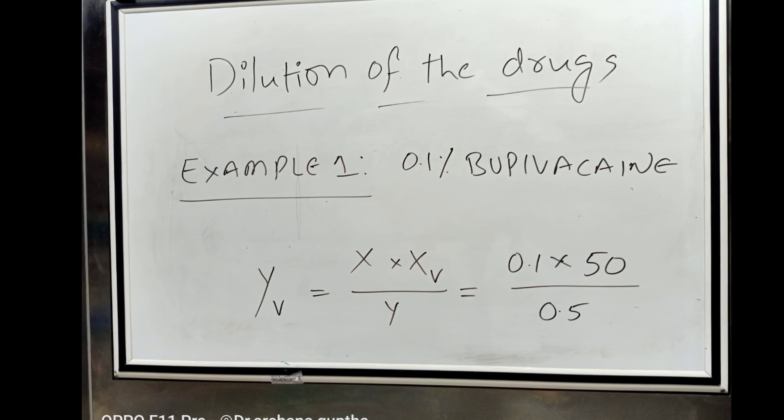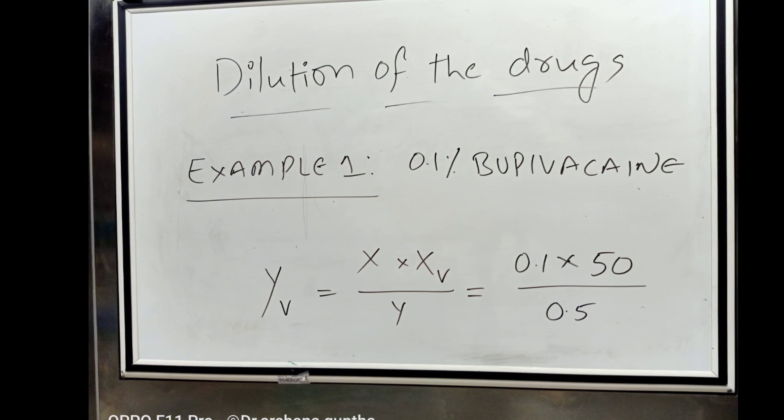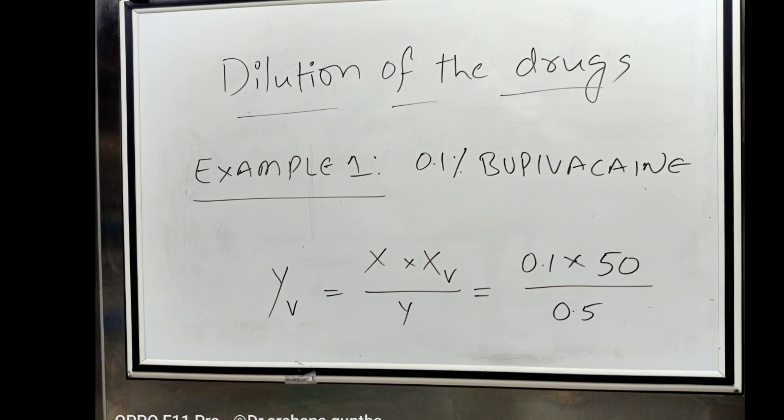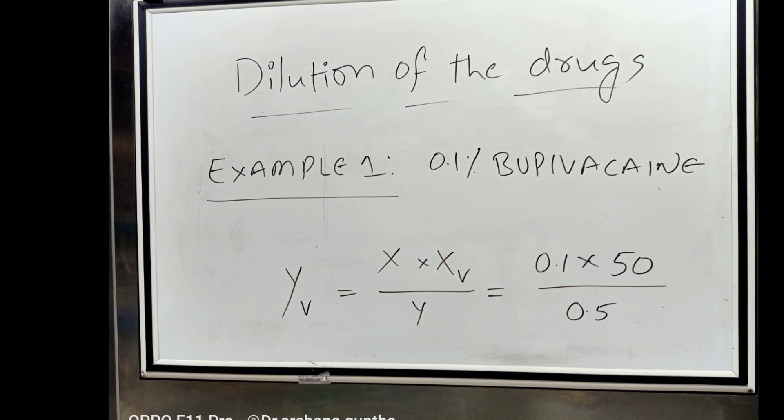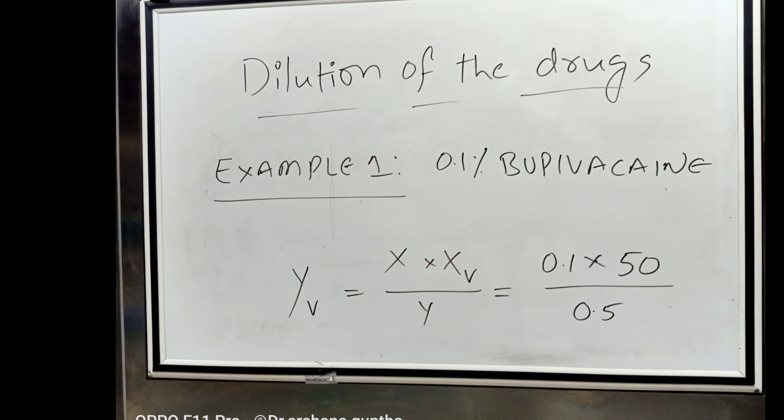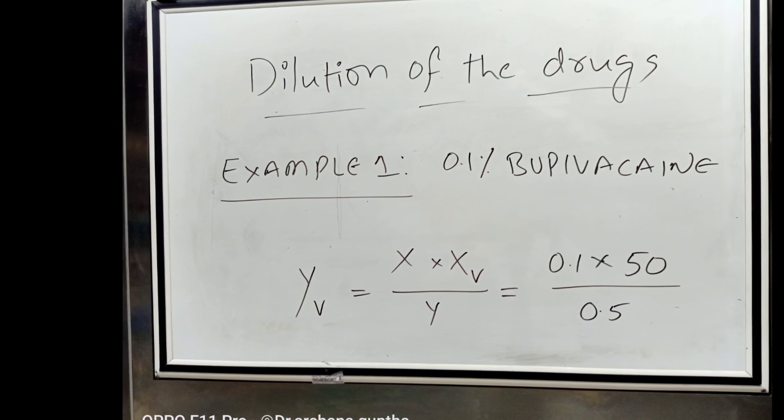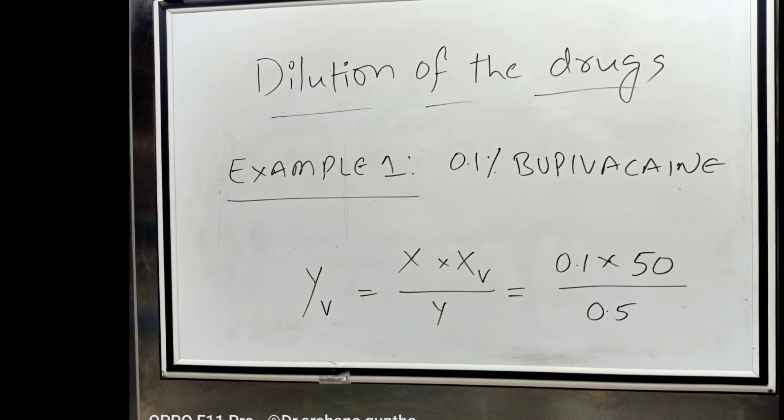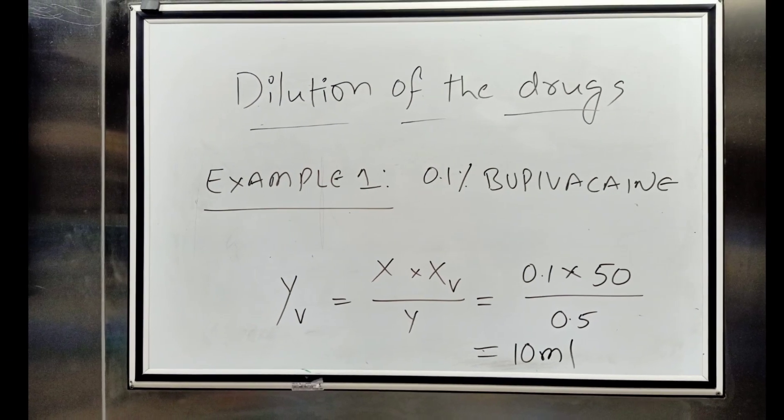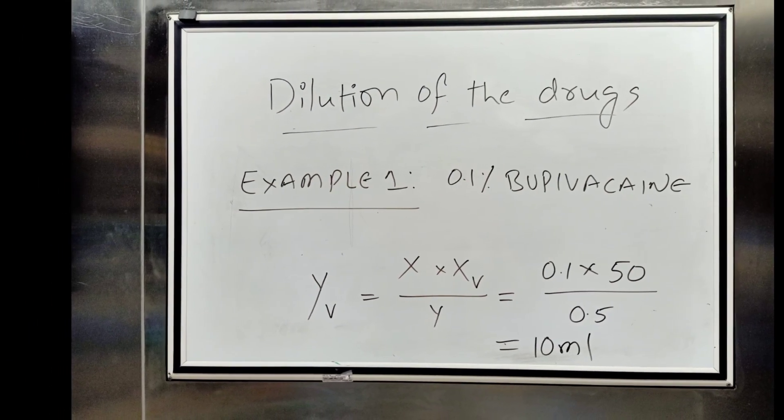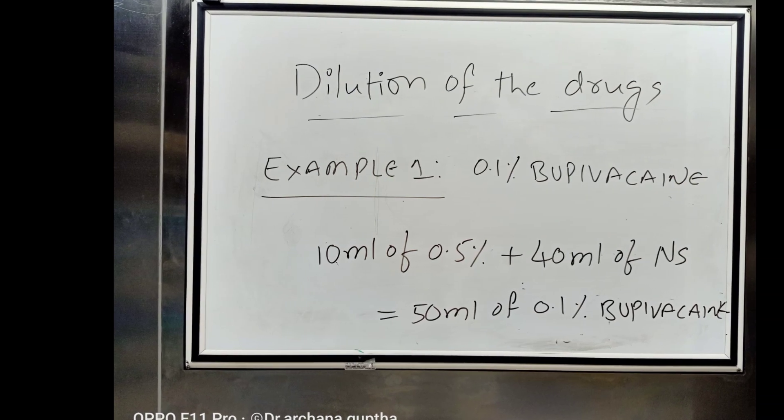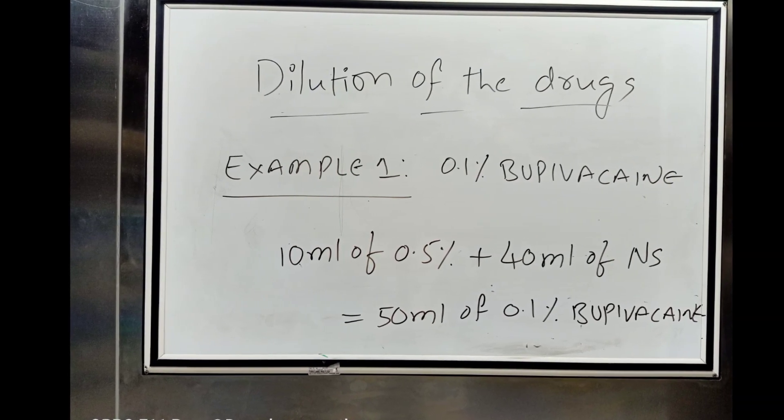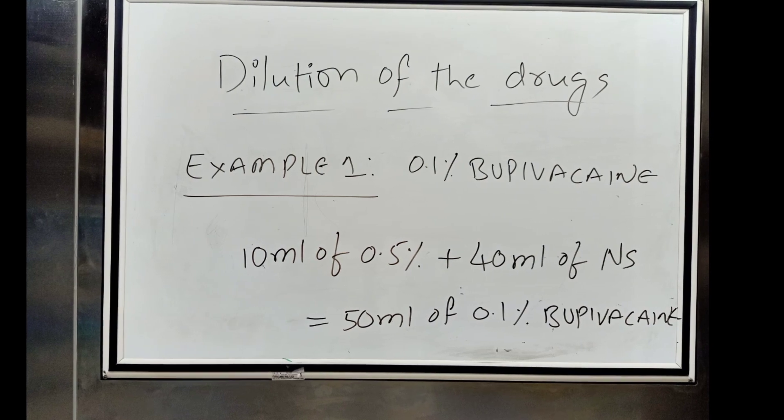By using the above formula, YV equals desired concentration times desired volume divided by available concentration. Here, available concentration of bupivacaine is 0.5%. Therefore, we obtain YV as 10 ml. This means 10 ml of 0.5% bupivacaine is diluted with 40 ml of normal saline solution to get 50 ml of 0.1% bupivacaine solution.